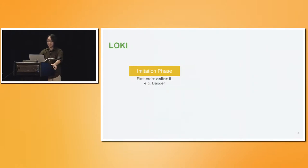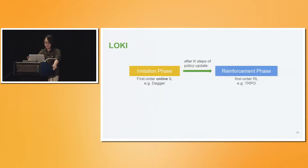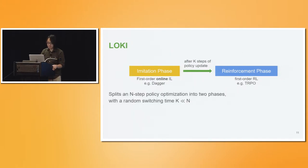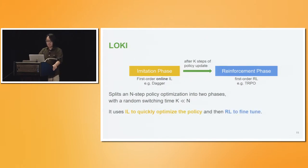What LOKI does is first perform an imitation phase, using a first-order online imitation learning method like DAgger. After doing that for k steps, it switches to a regular reinforcement learning phase, using first-order RL like TRPO or natural gradient descent. The trick here is that the number of iterations needed in the imitation learning phase is actually much smaller than the total number of iterations n of the entire process. The high-level idea is that LOKI uses online imitation learning to quickly optimize the policy at the beginning, and later uses RL to fine-tune.